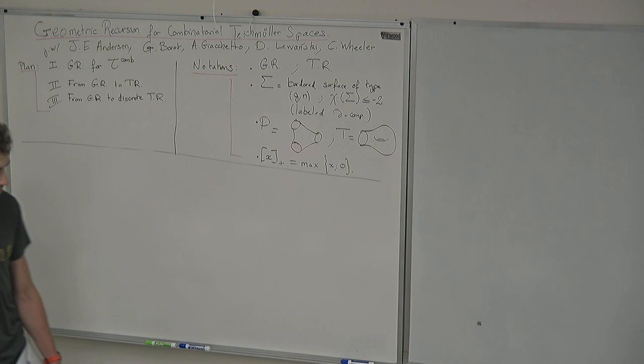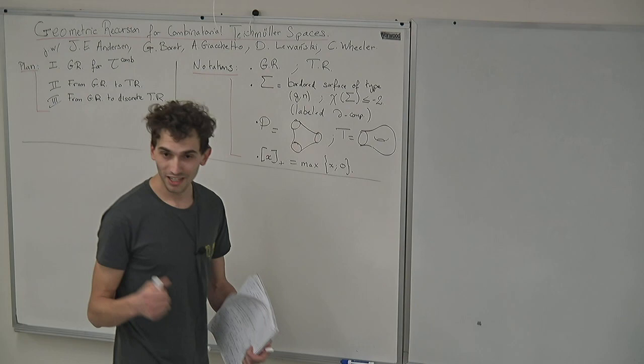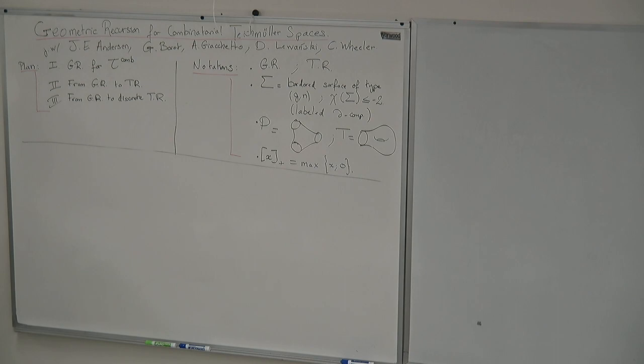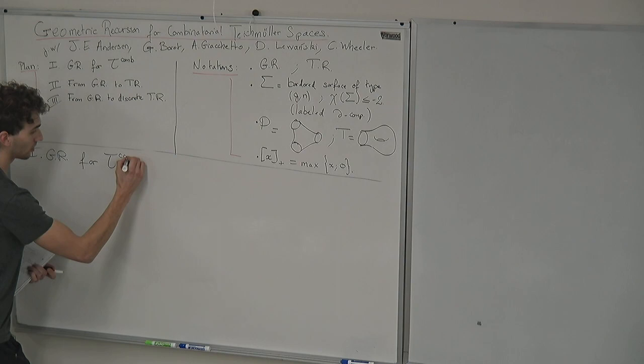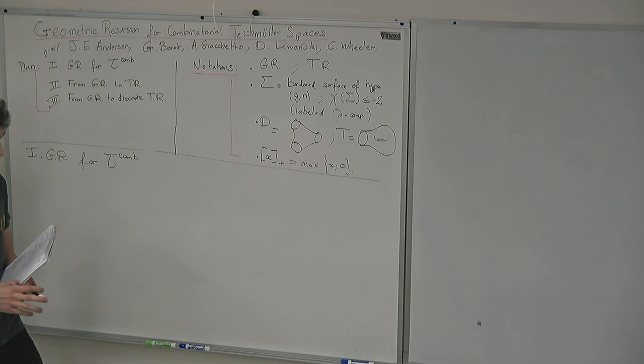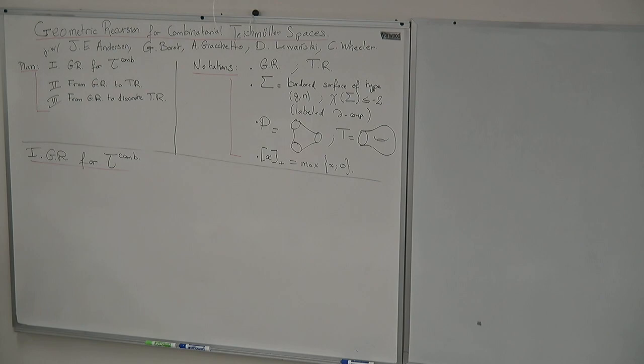This talk will be based on Alessandro's talk and Jorgen's talk, so thanks to both of them for making such great talks. Let me speak about GR for the combinatorial Teichmüller space. It will be really similar to the GR for the ordinary Teichmüller space, so similar to Jorgen's talk.